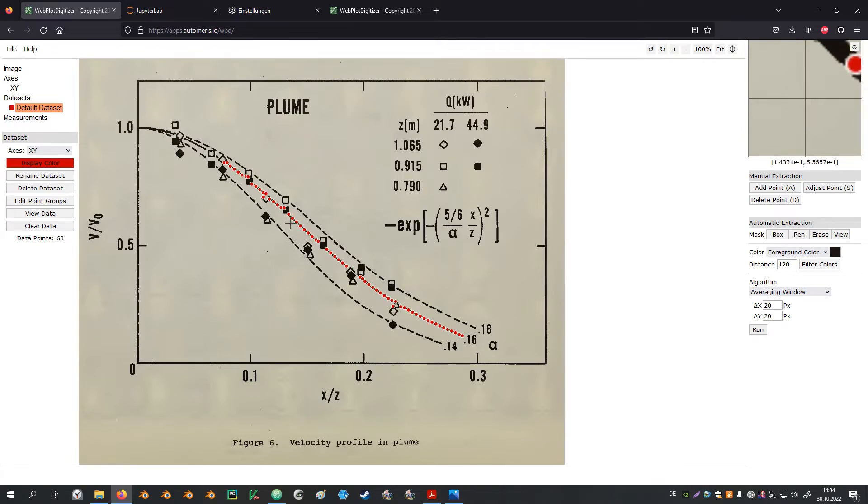Still there's a couple of points that are somehow off. So we go back to the manual extraction mode and hit delete points. Then we can just click on the points we want to have removed. Be careful when you click the points in the vicinity of the cursor will be removed so it can lead to unexpected results. Some points need to be added at the beginning where all the lines overlap which I would do manually. Again adjust all the points and download the results as before.